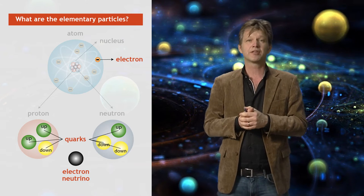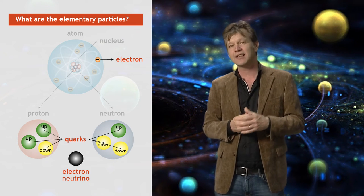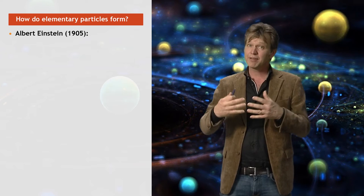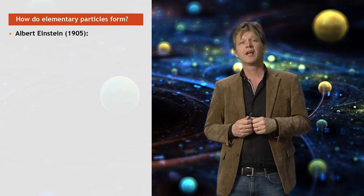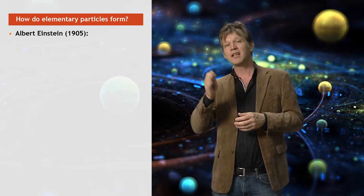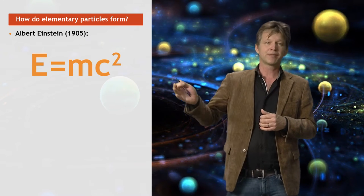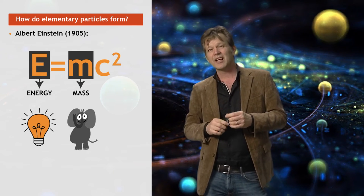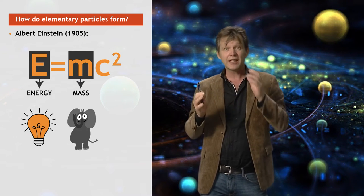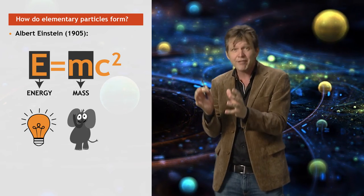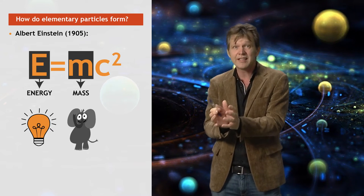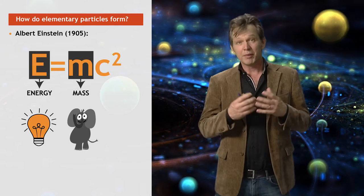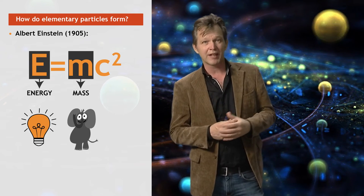However, these four particles is not the end of the story. Einstein realized in 1905, when he published the theory of special relativity, that energy and matter are actually equivalent to each other and can transform into each other. And this is expressed by his famous equation E equals MC squared, where E stands for energy and M is the mass. The consequence of this insight is huge. Suddenly it was realized that if you concentrate enough energy, you may be able to transform that energy into mass, into new matter, for example, new elementary particles.